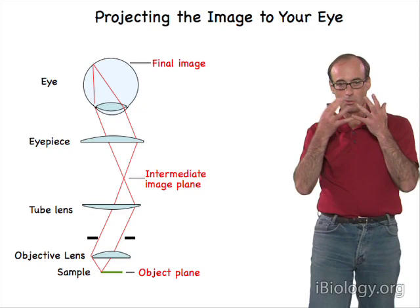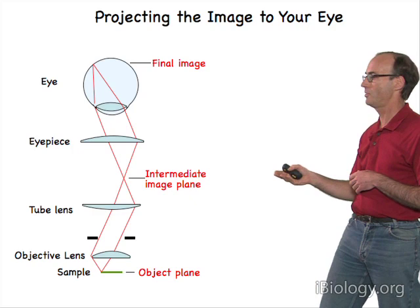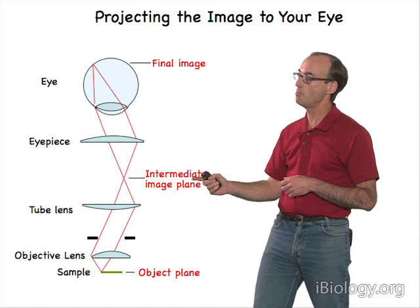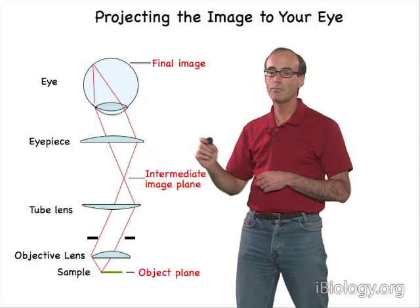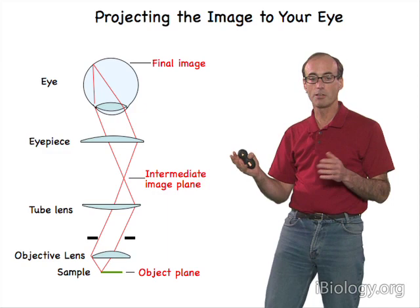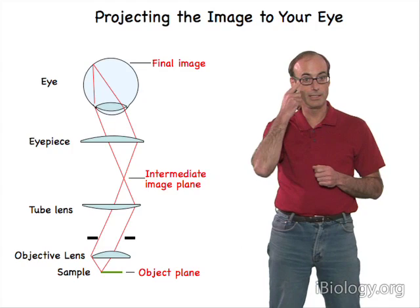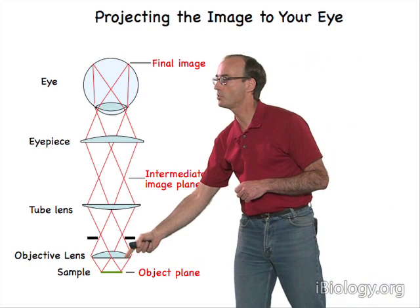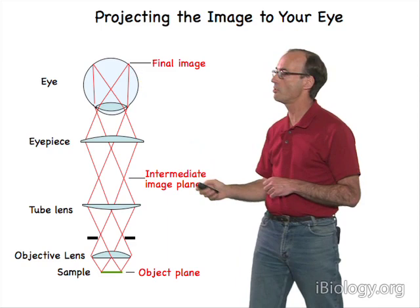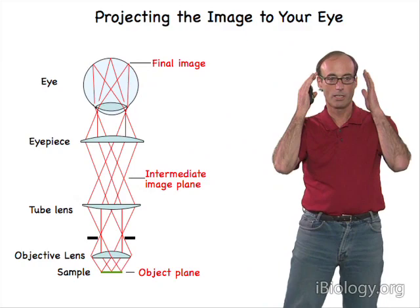So how do we actually see this image? One way is to view it with your eye through an eyepiece. Light from your specimen is focused through the objective lens and tube lens to produce an intermediate image. Another lens system — the eyepiece — further magnifies this intermediate image, and then the lens in your eye creates a final image on your retina, which is your detector. Different points of your specimen all travel through this optical system to be focused on your retina, creating the final image processed by your brain.